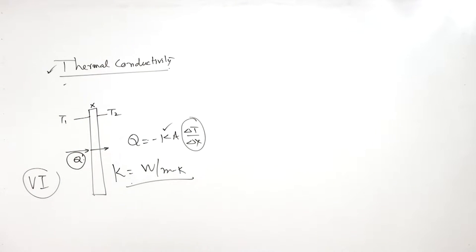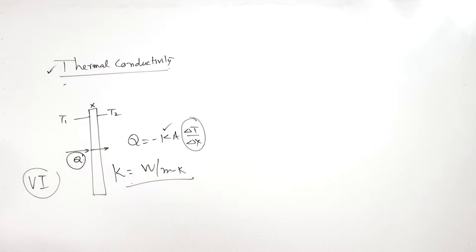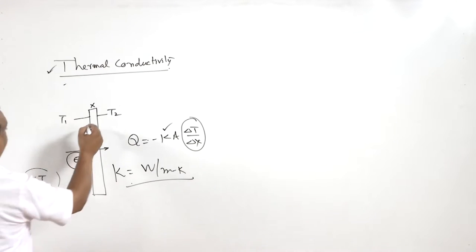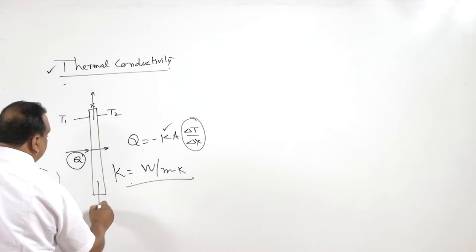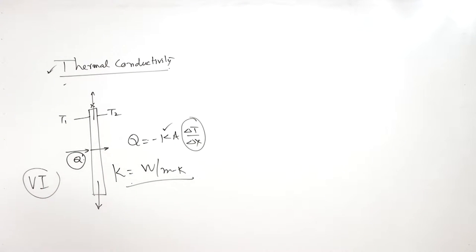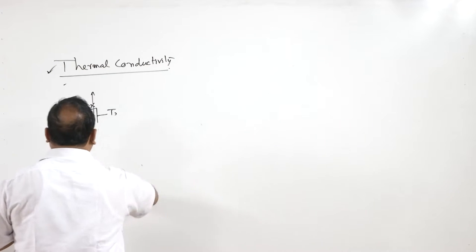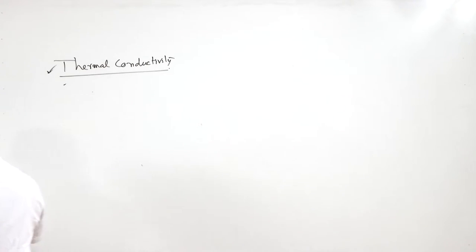There is a problem with the simple slab method: heat transmission also occurs to the surrounding air, and there may be non-uniform heating of the plate. To address this, an apparatus known as the guard heater type thermal conductivity measurement system has been designed.